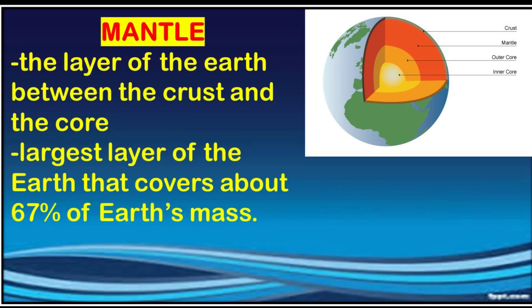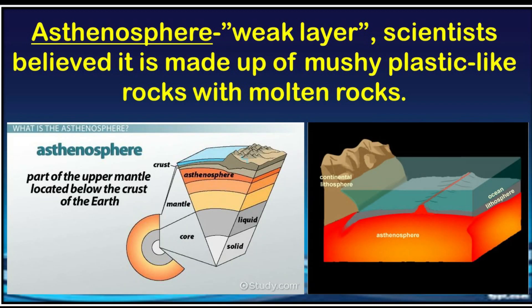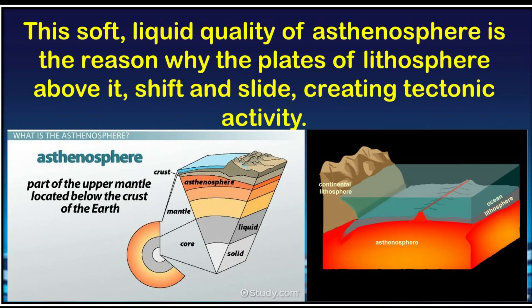Mantle. Located also in the mantle is the asthenosphere, or what we call the weak layer. Scientists believe it is made up of soft, plastic-like rocks with molten rocks. This soft, liquid quality of the asthenosphere is the reason why the plates of the lithosphere above it shift and slide, creating tectonic activity.